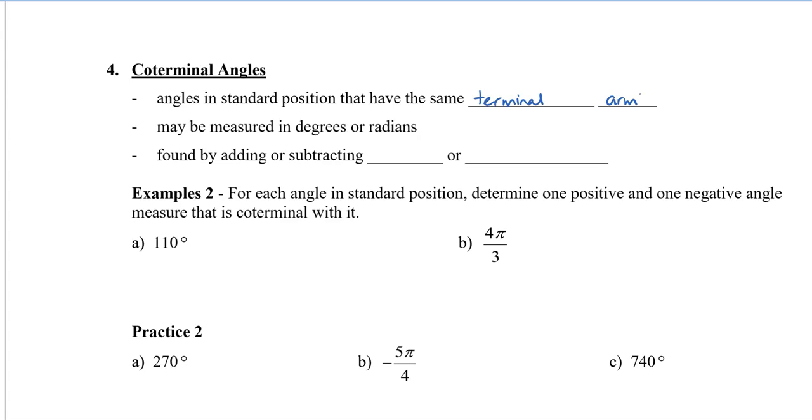They may be measured in degrees or radians, and because it's having the same terminal arm, that means we need to rotate 360 degrees. So we can find the coterminal angle by adding or subtracting 360, but for radians, that would be considered to be 2π radians.